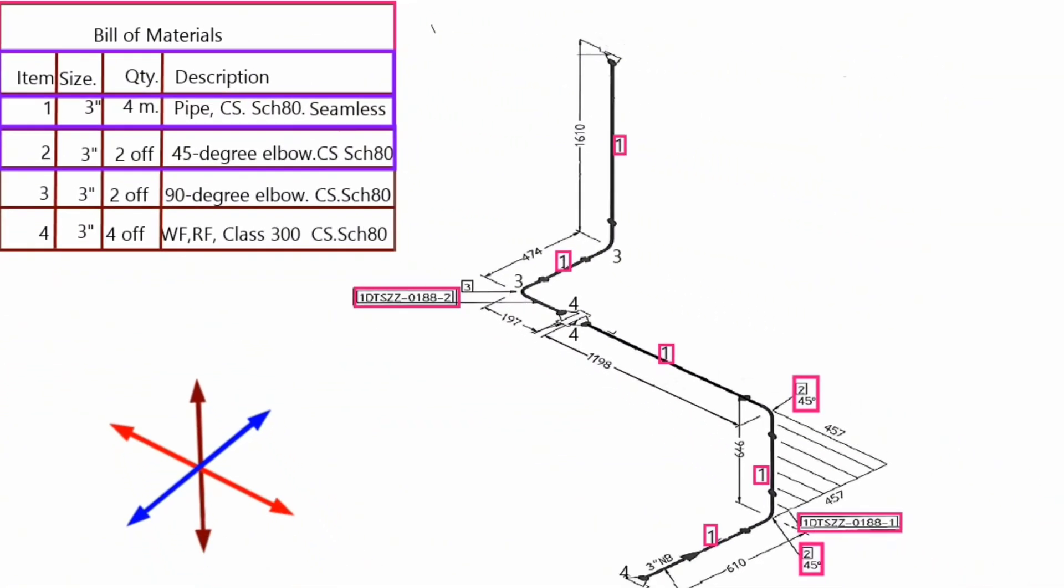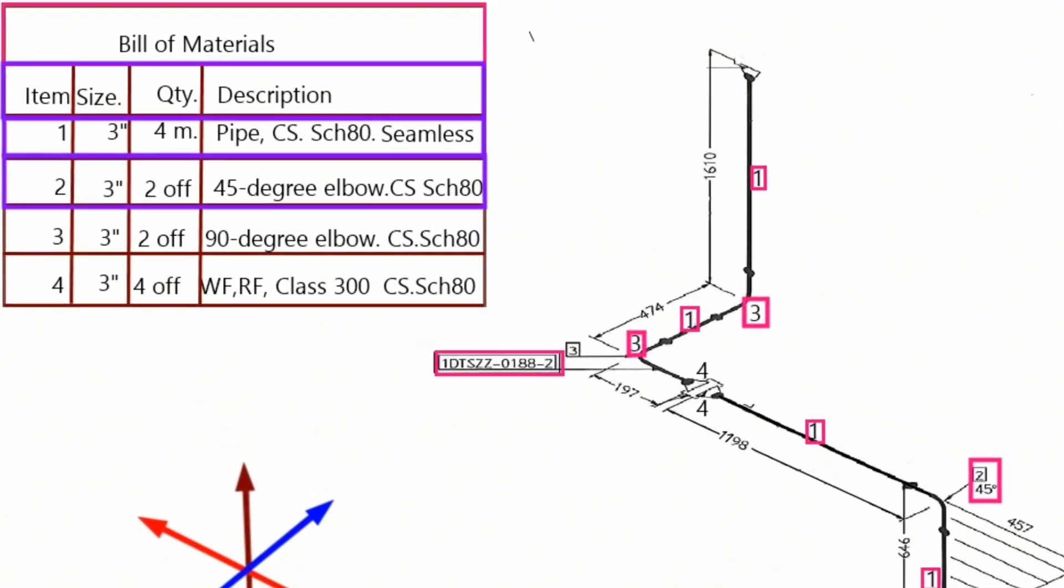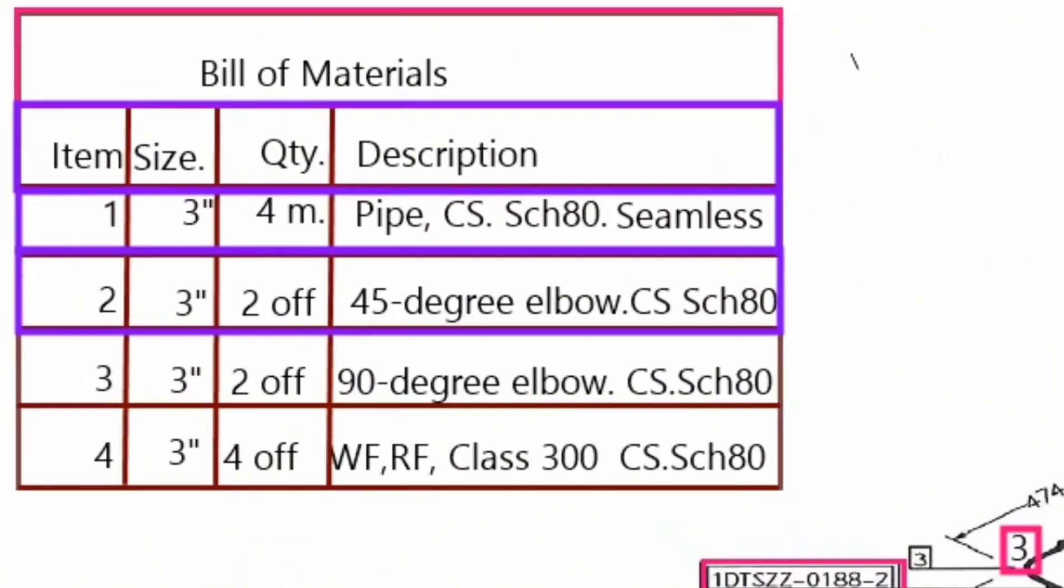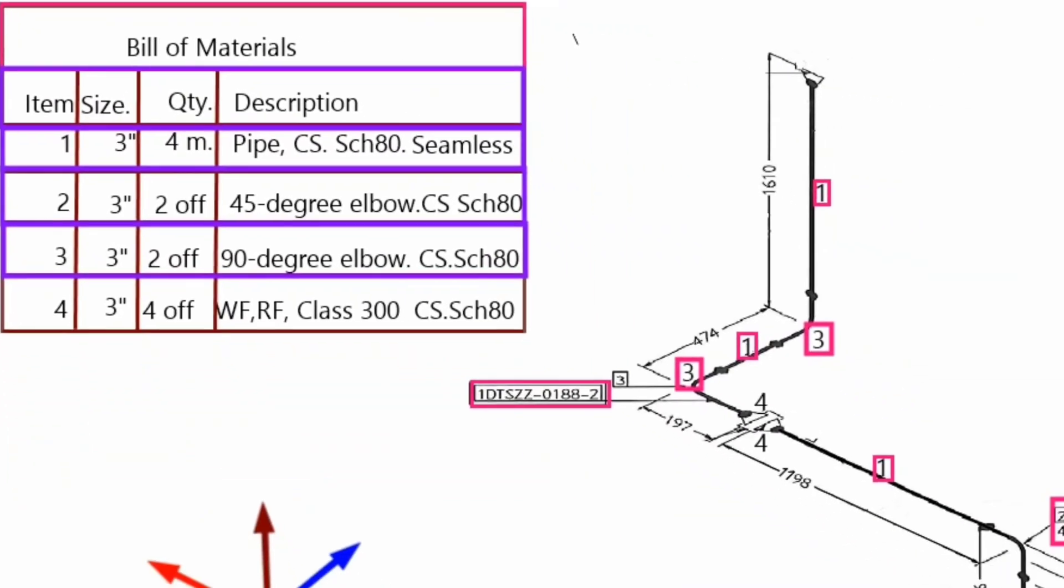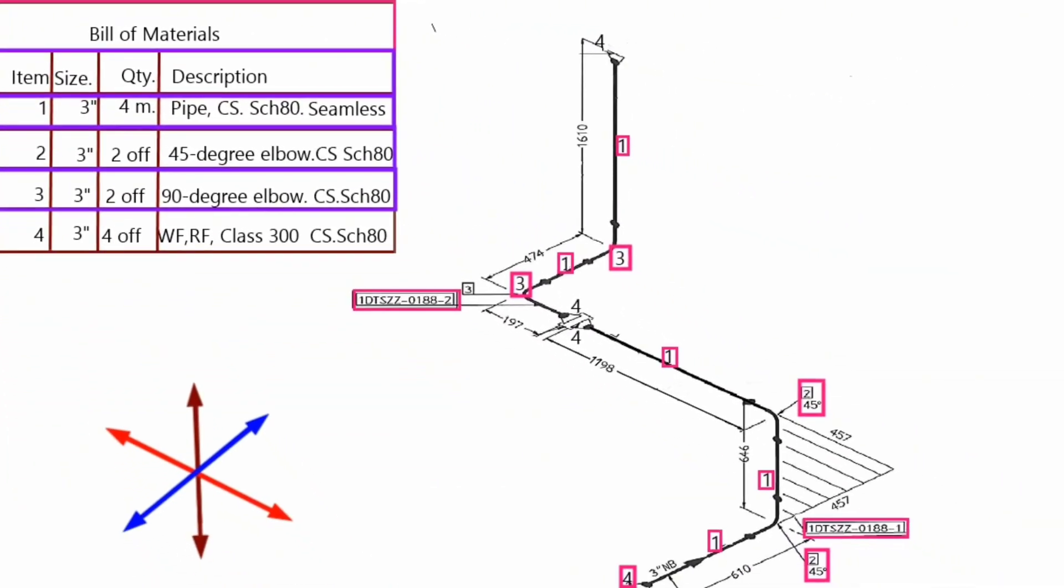Item number 3 is shown in four places on the pipe drawings. Now let's look at the bill of materials.